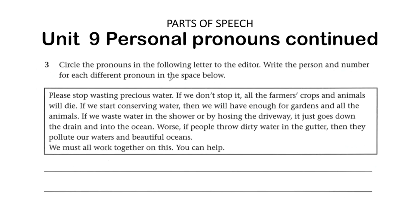'If we don't stop it, all the farmers, crops and animals will die.' In this sentence we've got 'we' again, and 'it' is also functioning as a pronoun here. Underneath, we need to write the person and number for each. So for 'we,' it's first person plural, because it's more than one and refers to a group of people. Record the information about person and number — first, second, or third — and write whether it is singular or plural for the remaining pronouns you identify.